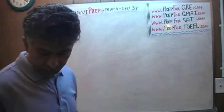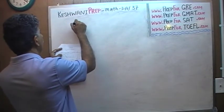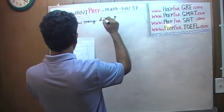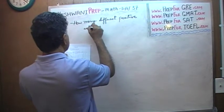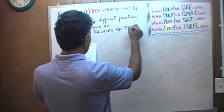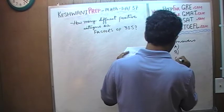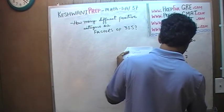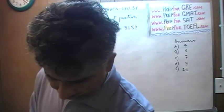The problem that we are about to do today is for day number 37. Here is the problem, the question is very simple, very straightforward: how many different positive integers are factors of 315?